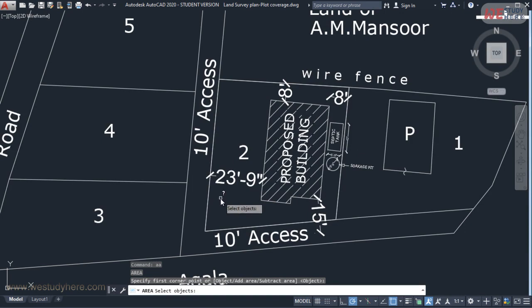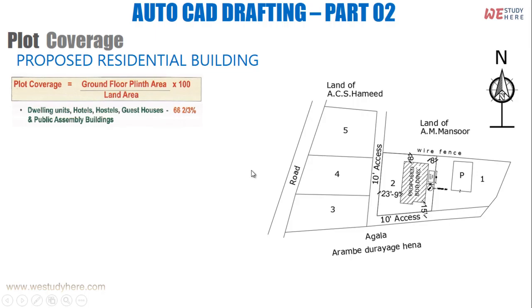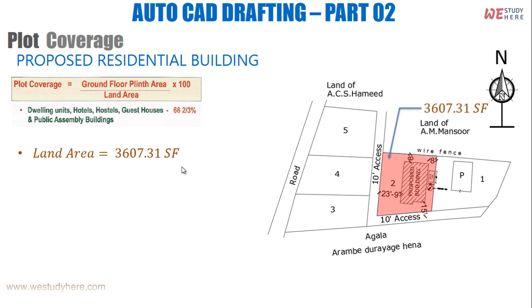Let's check that in the CAD file. Here I'll check the area of the land — that says 3,607.31 square feet. So the land area is 3,607.31 square feet. Let's highlight the same in the site plan — this area is 3,607.31 square feet.